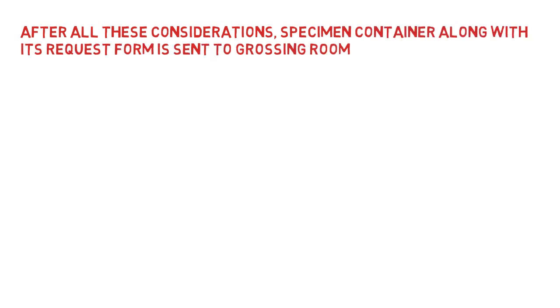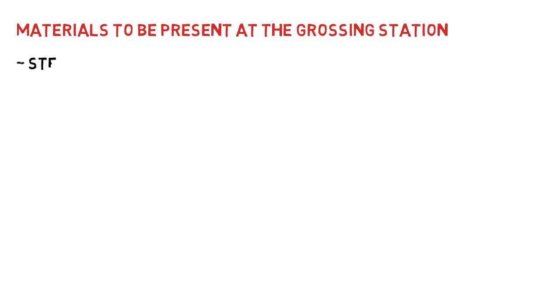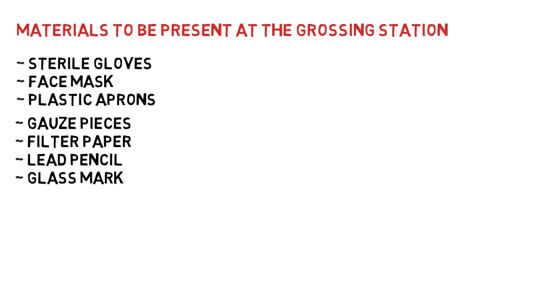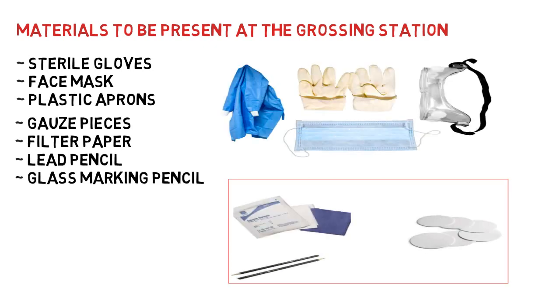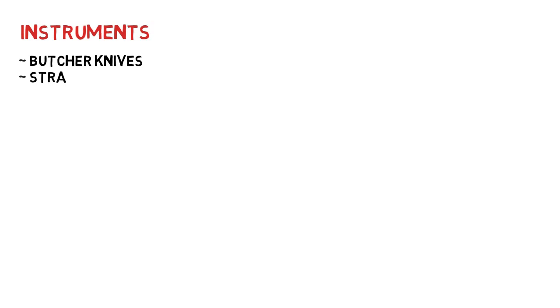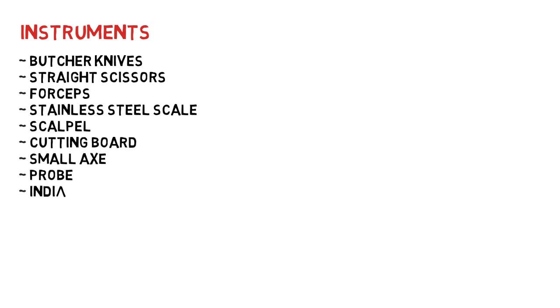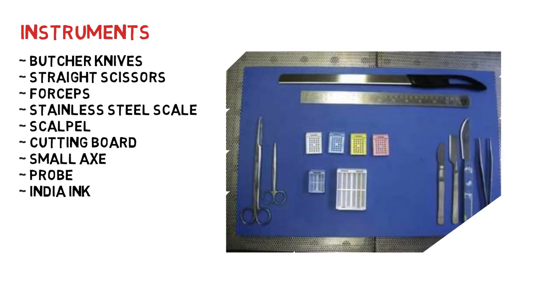After all these considerations, the specimen container along with its request form is sent to the grossing room. Materials to be present on the grossing station include sterile gloves, face masks, plastic aprons, gauze pieces, filter papers, and lead pencils or glass marking pencils. Instruments required include butcher knives, straight scissors, forceps, stainless steel scale, scalpel, probe, cutting board, small axe, surgical blade, stainless steel tray, and India ink for marking or identification.